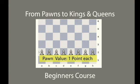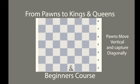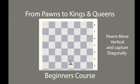The point value for pawns: each pawn is valued at one point. Eight pawns would be considered eight points. Pawns move vertical — they move forward and capture on a diagonal. Pawns can never move backwards; they're the only piece on the board that cannot move backwards. Also, they're the only piece that, once they reach the last row — the last rank — they can be promoted to a higher piece.